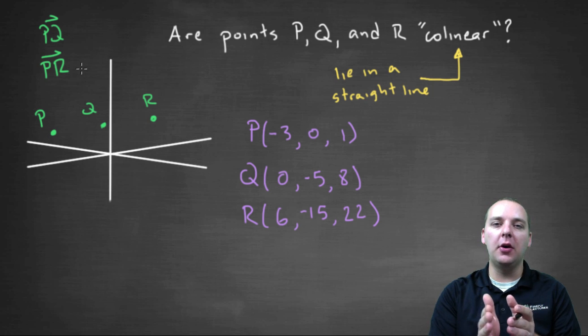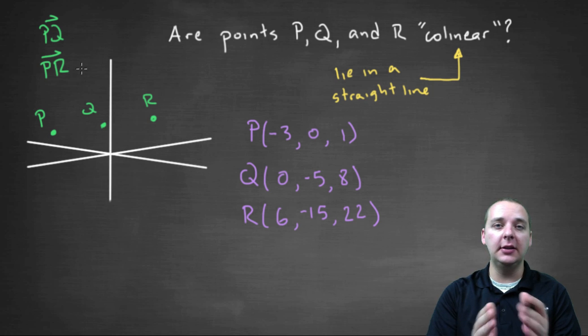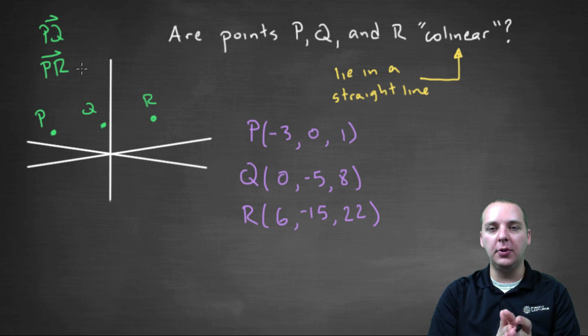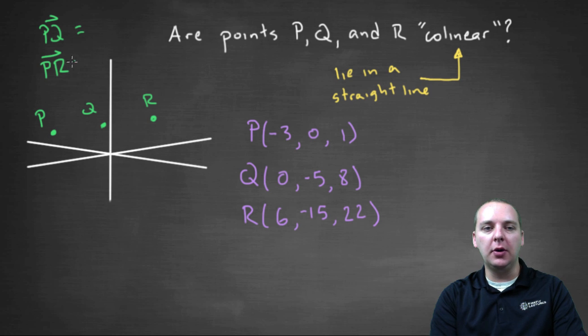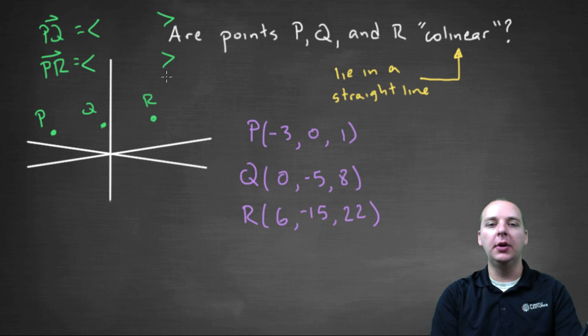If PQ and PR are actually different vectors—more than just differing by a scalar, but going in different directions—then the three points must not be in a straight line. To build these vectors, you do terminal minus initial for the i, j, and k components.